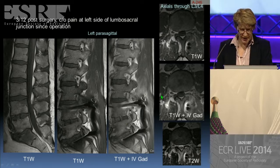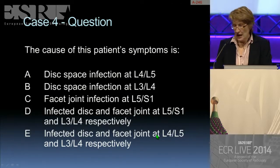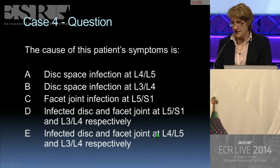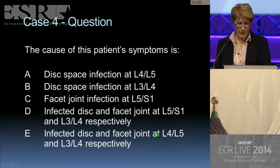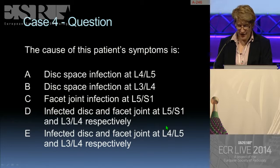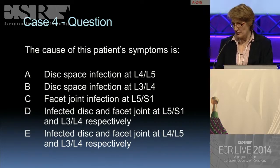Concentrating on the left side at the L3-L4 level, the question is: A, disc space infection at L4-L5; B, disc space infection at L3-L4; C, facet joint infection at L5-S1; D, infected disc and facet joint at L5-S1 and L3-L4 respectively; or E, infected disc and facet joint at L4-L5 and L3-L4 respectively.